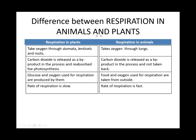Difference between respiration in animals and plants: Plants take oxygen through stomata, lenticels, and roots, while animals take oxygen through lungs. In plants, carbon dioxide released as a byproduct of respiration is re-absorbed for photosynthesis; in animals, carbon dioxide is simply released. In plants, glucose and oxygen used for respiration are produced by the plant itself; in animals, food and oxygen are taken from outside. The rate of respiration in plants is low, while in animals it is very fast.